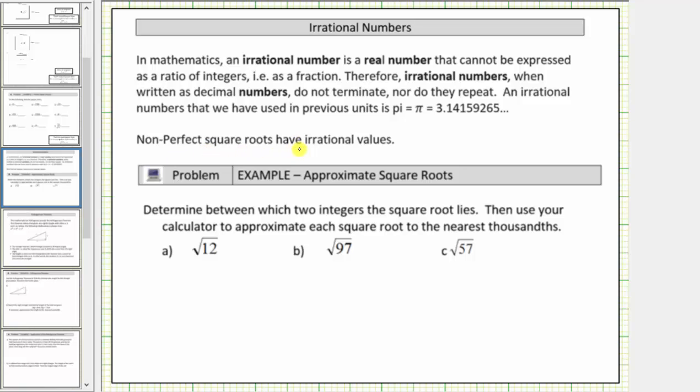Non-perfect square roots have irrational values. Looking at the problem below, we are asked to determine between which two integers the square root lies, then use your calculator to approximate each square root to the nearest thousandths.